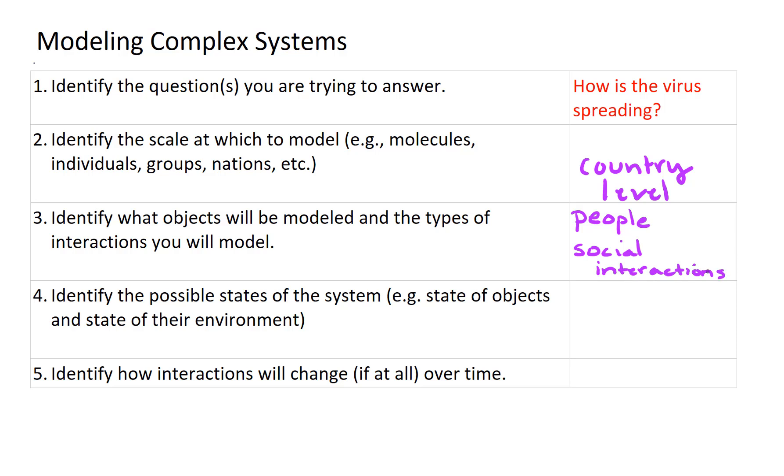And then number four, identify the possible states of the system. So our people, they could be susceptible to the disease, they could be infected with the disease, they could be recovered from the disease, and maybe you have another state immune or inoculated. So there's even more states you could build in.